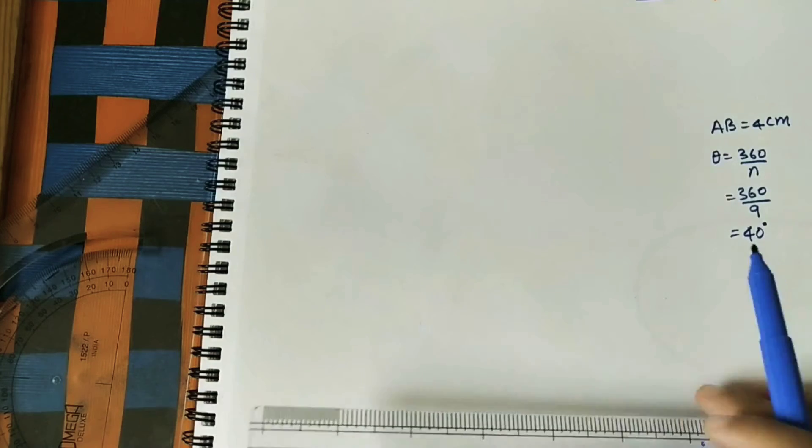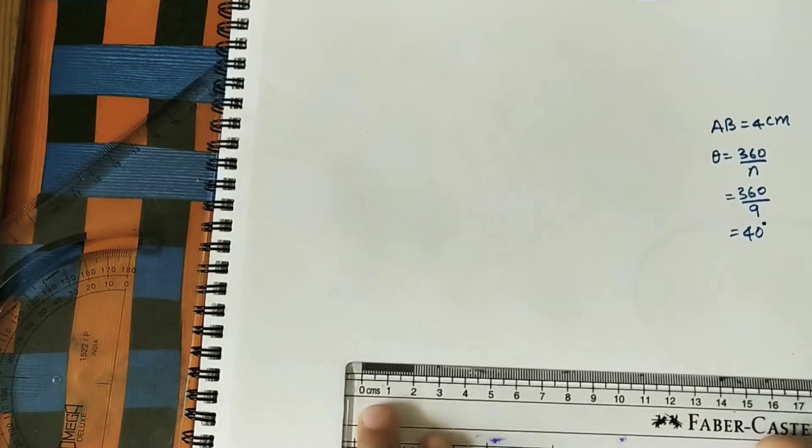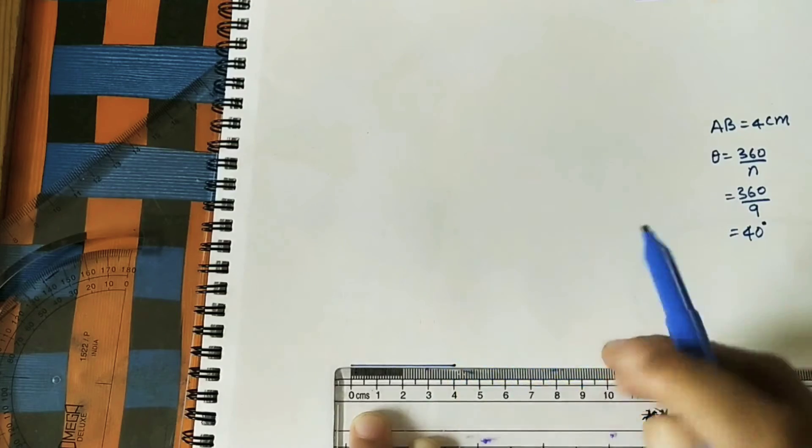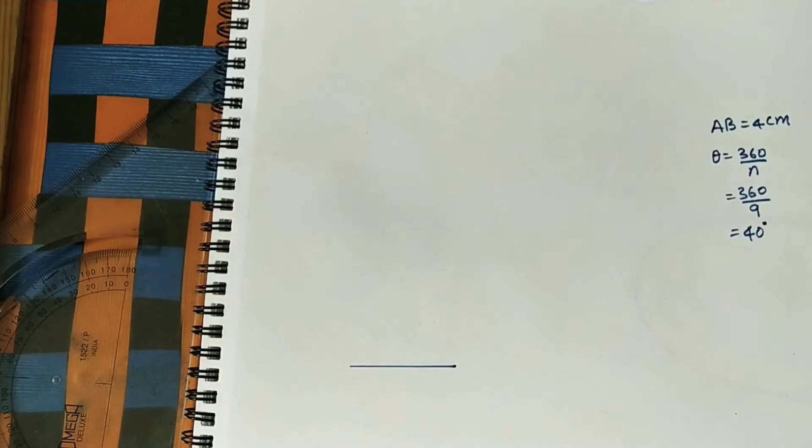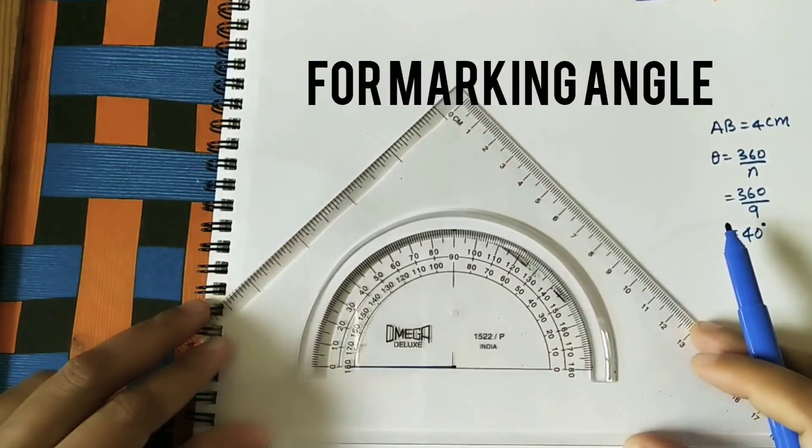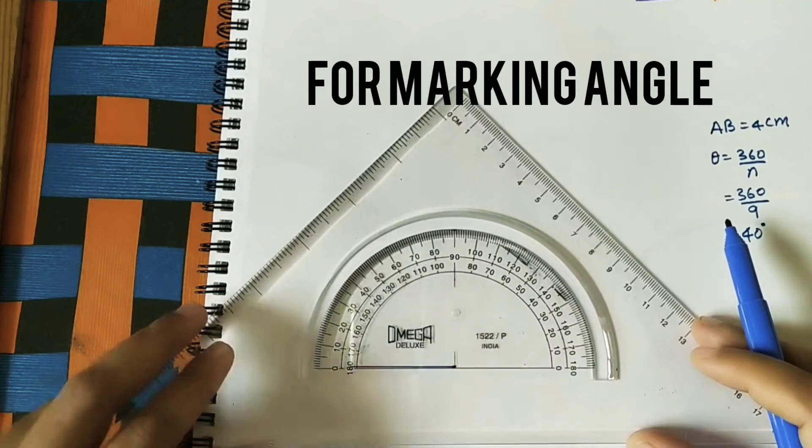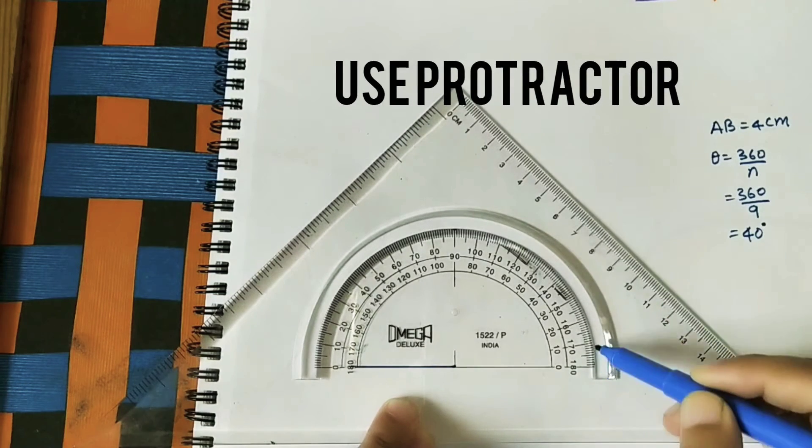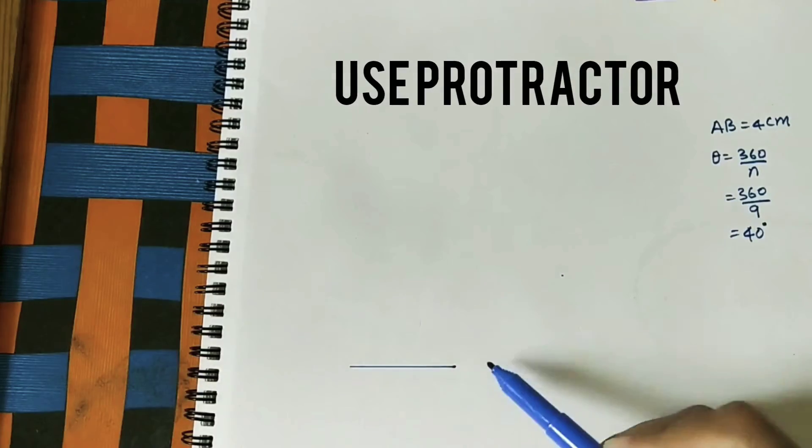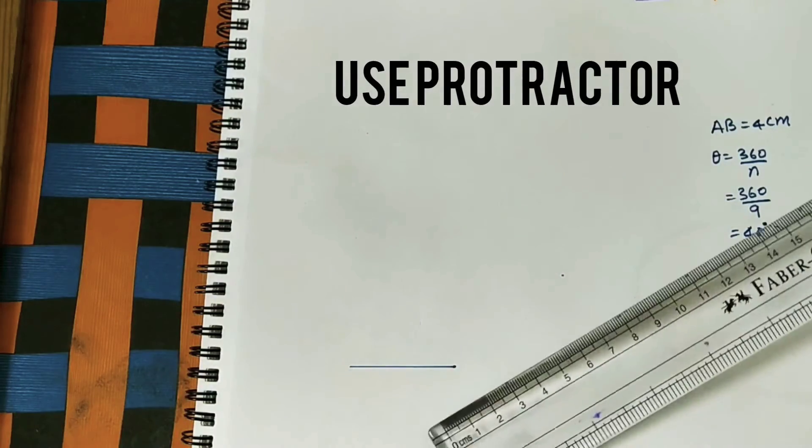Take the length AB is equal to 4 centimeters. Let us do quickly 4 centimeter. And then outer angle is 40 degrees, so this angle is 40 here. In the direction do the 4 centimeter line.